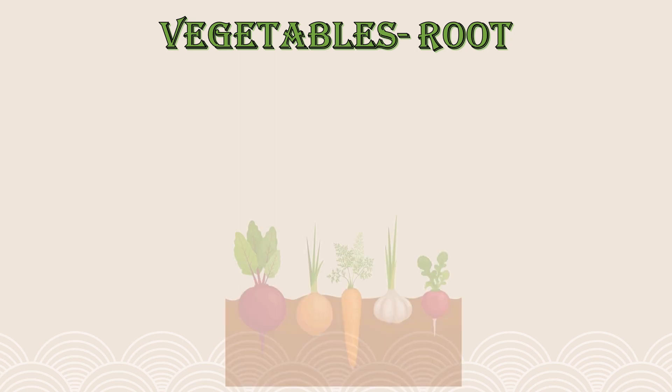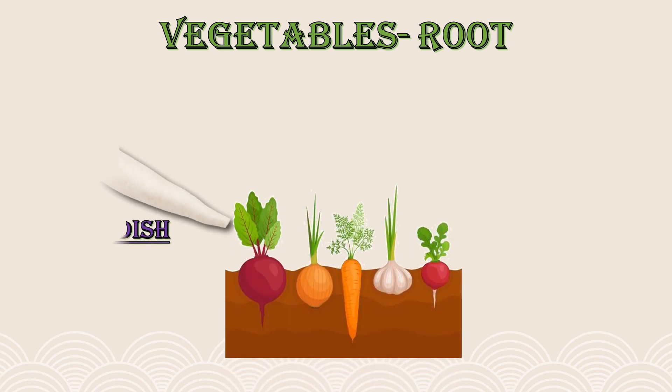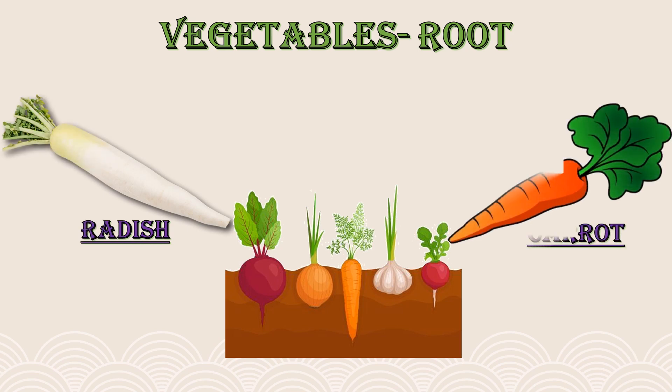We eat food from almost all the parts of the plant, be it root, stem, leaves, flowers or fruit. Let's get started with the vegetables that are the root of a plant. For example, beetroot, radish, carrot, and turnip. These are some of the roots that we eat as vegetables.